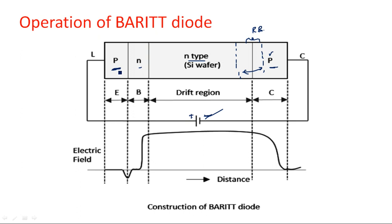The three regions are: the emitter made up of P-type, the base made up of N-type, and the collector made up of P-type. We can treat this as a transistor with three regions. Because of the negative supply applied to the P-type material, a reverse bias junction is developed between the P-type and N-type, causing holes and electrons to be neutralized and a high amount of electric field to be generated.